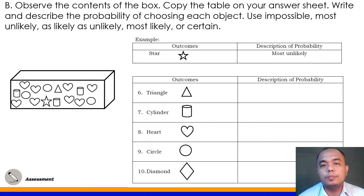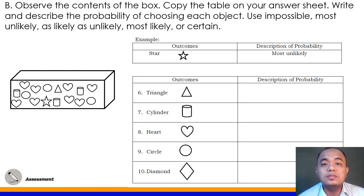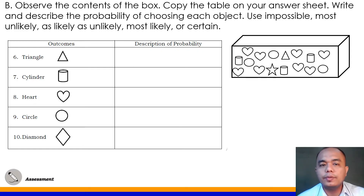Now let's proceed to Part B of your assessment. Direction: Observe the contents of the box. Copy the table on your answer sheet and write and describe the probability of choosing each object. Use impossible, most unlikely, as likely as unlikely, most likely, or certain.